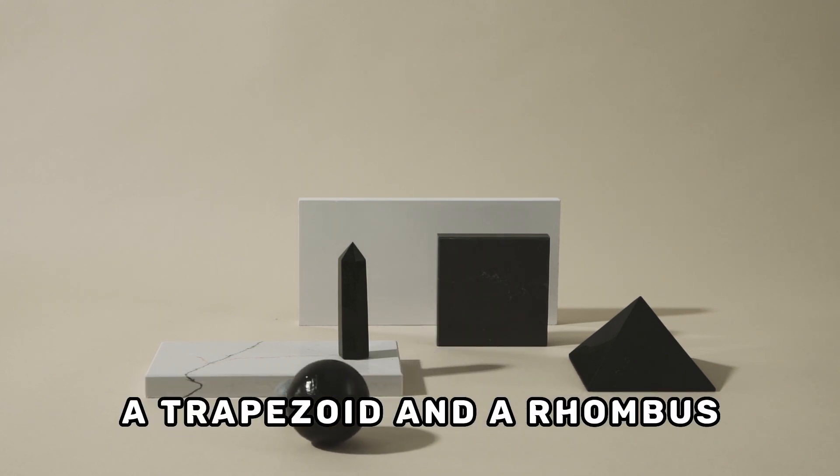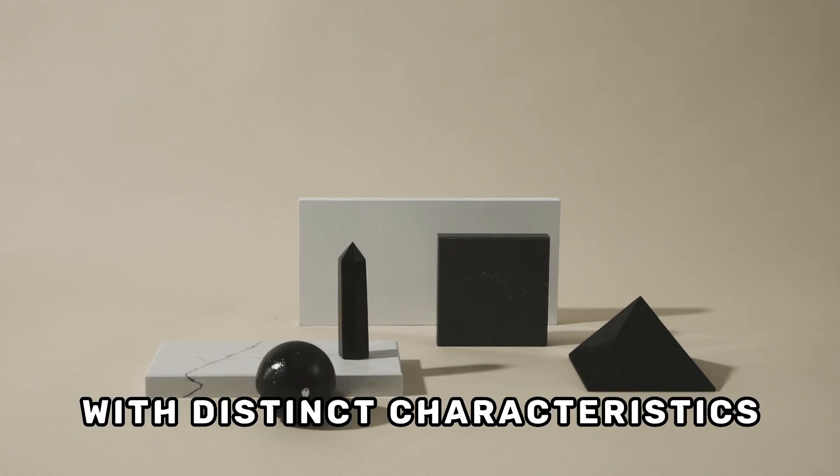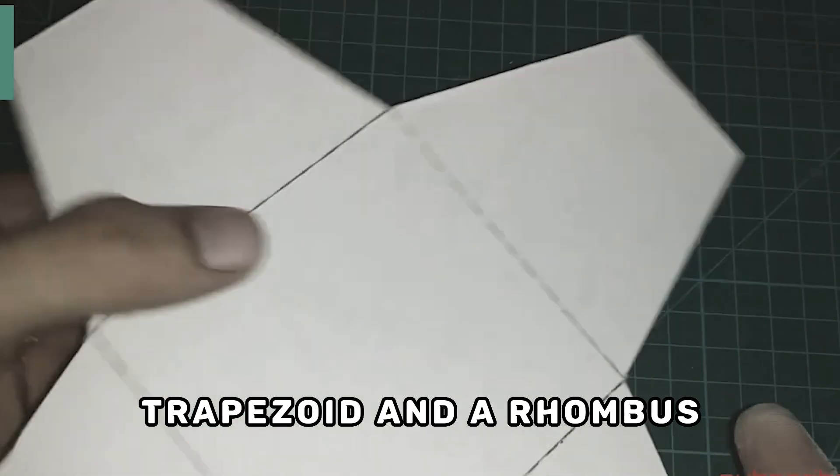A trapezoid and a rhombus are two different types of quadrilaterals with distinct characteristics. Here's an explanation of the differences between a trapezoid and a rhombus.